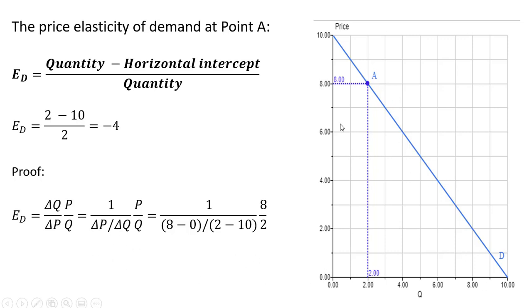Change in P over change in Q is just the slope of the demand curve, so 1 over that, all multiplied by price divided by quantity.